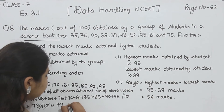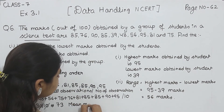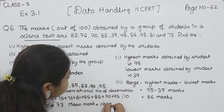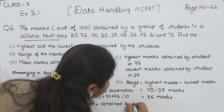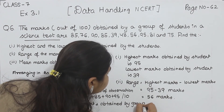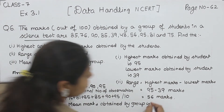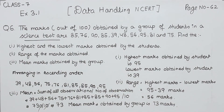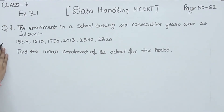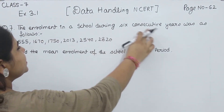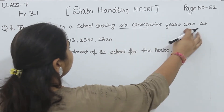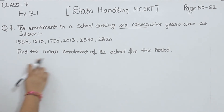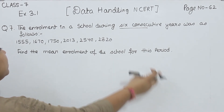Now we are going to write the statement. This is question number 6. Question number 7: the enrollment in the school during 6 consecutive years was as follows. These are the enrollment numbers given. Find the mean enrollment of the students for this period.